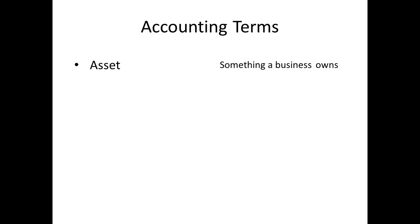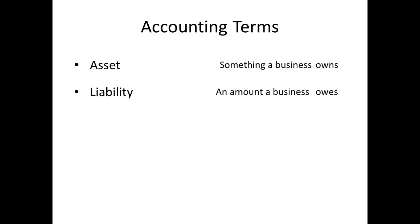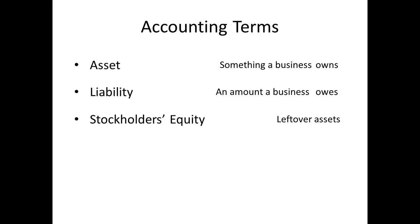The second term is liability. A liability is an amount a business owes. The third term is stockholders' equity. Stockholders' equity is sometimes called owner's equity because stockholders are the owners of a corporation. Stockholders' or owner's equity is leftover assets. We'll talk more about assets, liabilities, and leftover assets in a minute.